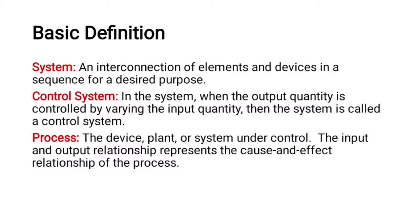The next element is the process, also called a device, plant, or system under control. The input and output relationship represents the cause and effect relationship of the process. Based on the input, certain actions are performed in the process, and accordingly the output is produced. So the input-output relationship is established by the process.